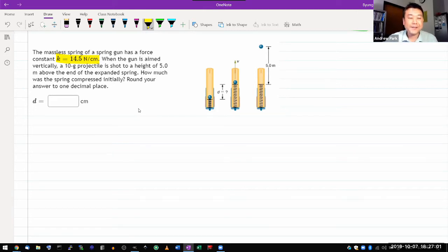When the gun is aimed vertically, some mass of projectile, I guess that's probably relevant, so let me use the letter M. Projectile is shot to a height of some height above the end of the spring. Let me label it here because there can be a potential ambiguity, and I want to make sure I avoid that ambiguity. How much was the spring compressed initially?